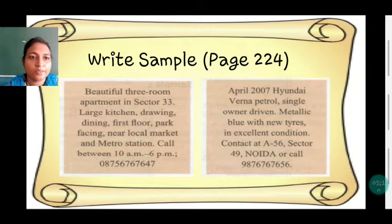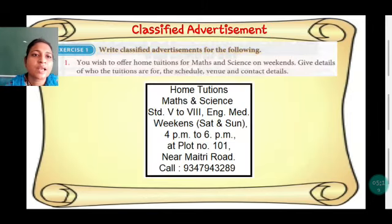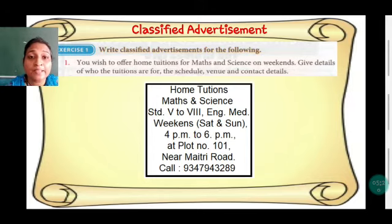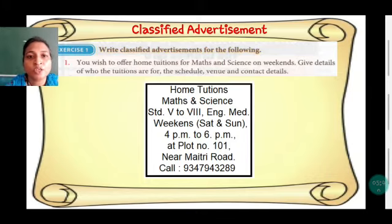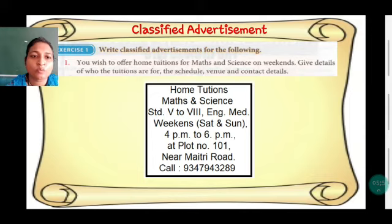Classified advertisement Exercise 1, first question: you wish to offer home tuitions for maths and science on weekends. Give details of who the tuitions are for, the schedule, venue, and contact details. Write it and then make a box — square or rectangular form. Don't write in big sentences. Example: 'Home tuitions — Maths and Science, Standard 5th to 8th, English medium, Weekend: Saturday and Sunday, 4pm to 6pm, at Plot number 101, near Maitree Road. Call [number].' Note: the address and number used here are just examples.